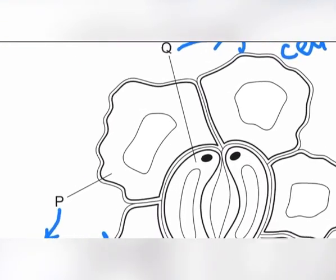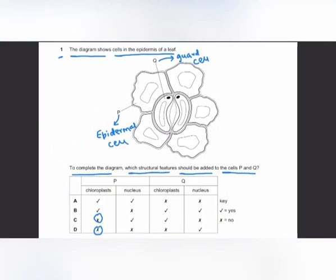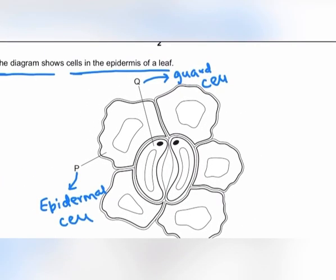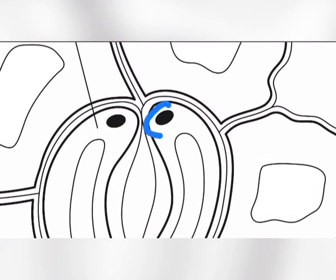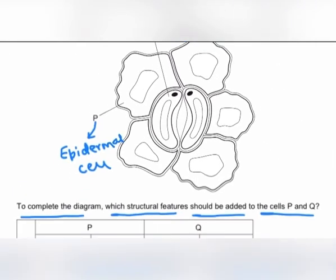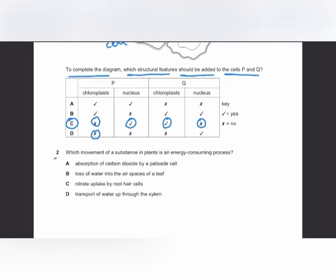Cell P has no nucleus in the diagram, so we need to place the nucleus in cell P. For cell Q, guard cells do contain chloroplasts, so to complete the diagram we add chloroplasts. The nucleus is already present in the guard cell diagram, so we do not need to add it. The answer is C.